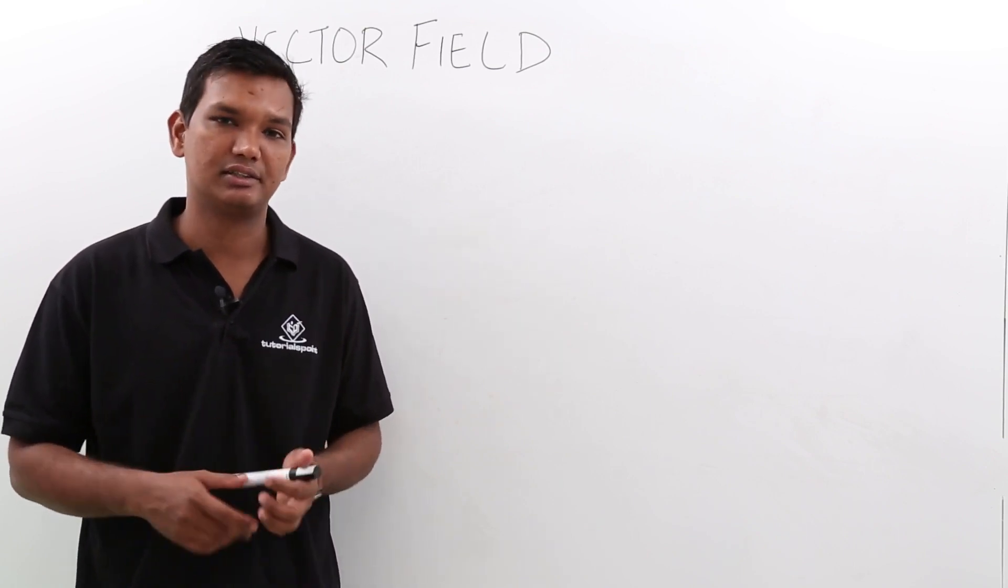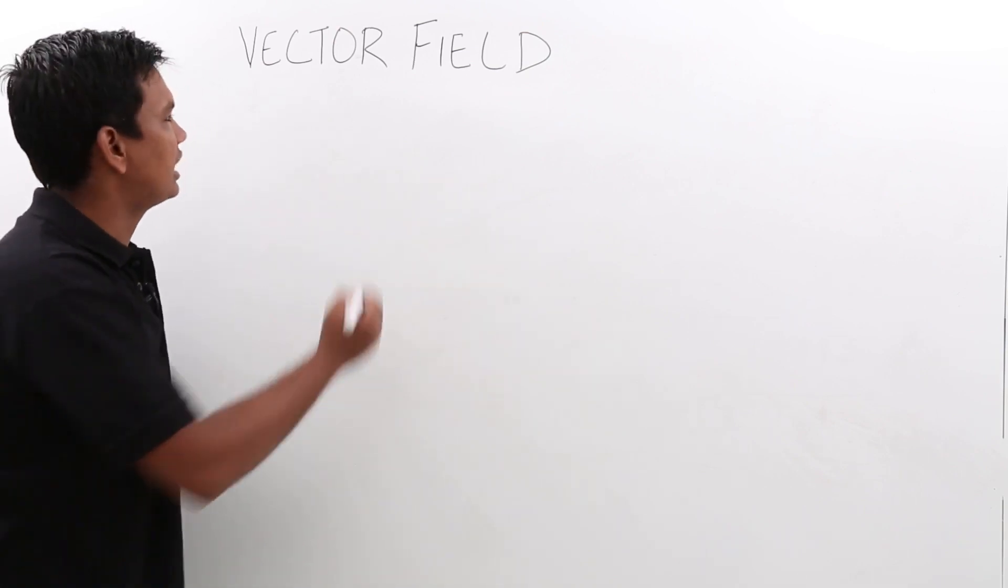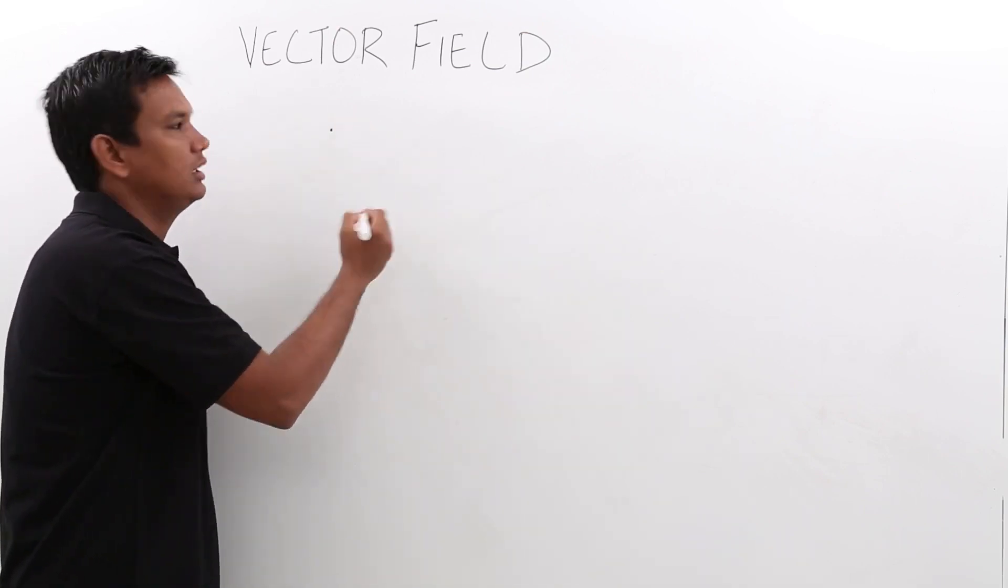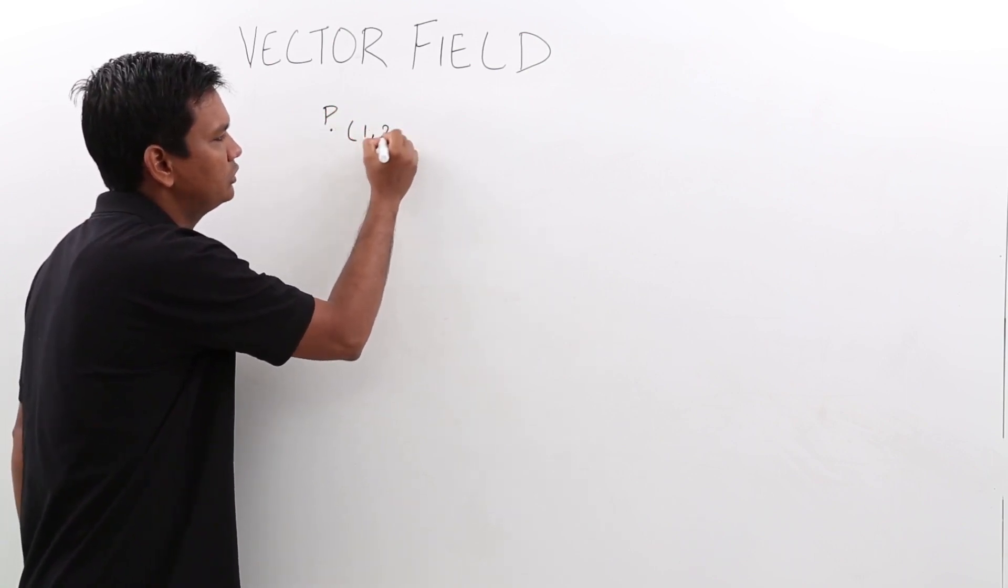Let's try to understand this. Assume a point is given in Cartesian coordinates, for example P with coordinate 1, 2, 3.